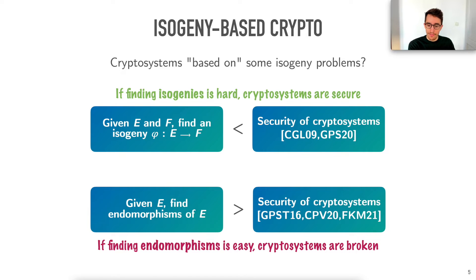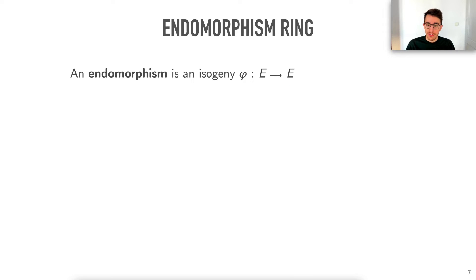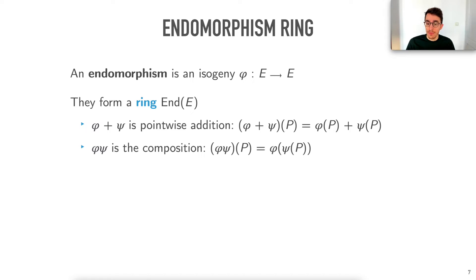The issue is that we have relations between the security of cryptosystems and two different problems. What we would be hoping for is for these two problems to be equivalent — and this is the problem we are tackling in this work. An endomorphism is an isogeny from an elliptic curve to itself, and that allows the set of all endomorphisms of a given curve to have the structure of a ring. We write End(E) for the set of all endomorphisms, with addition given by pointwise addition and multiplication given by composition of endomorphisms.